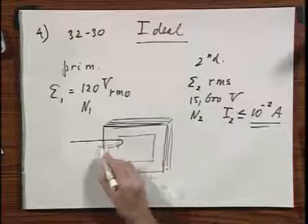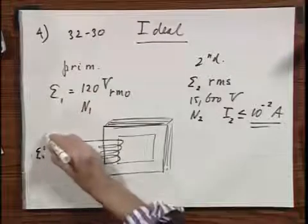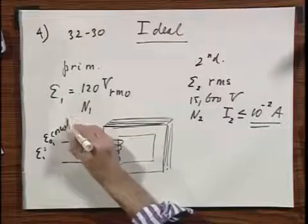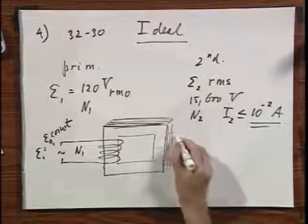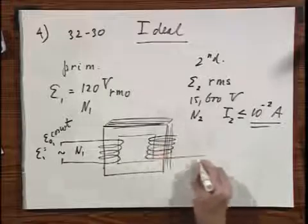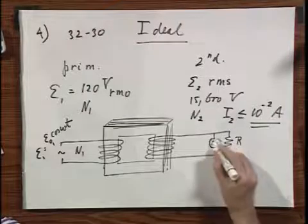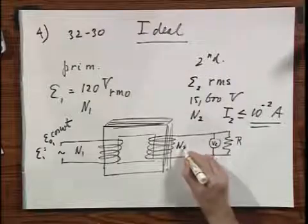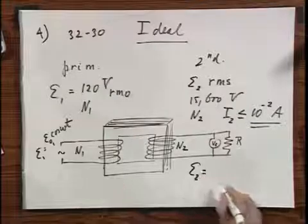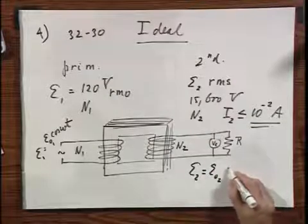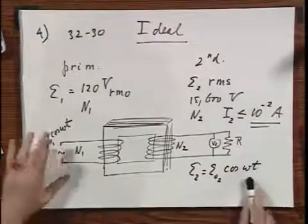Here is the primary winding, so here is your E1 — E01 cosine omega t — driving this, and it has N1 windings. And here is your secondary winding; there could be a resistor here and a voltmeter V2, and this has N2 windings. This voltmeter would read E2, which is an induced EMF — I'll write that as E02 cosine omega t. I assume the two are exactly in phase.